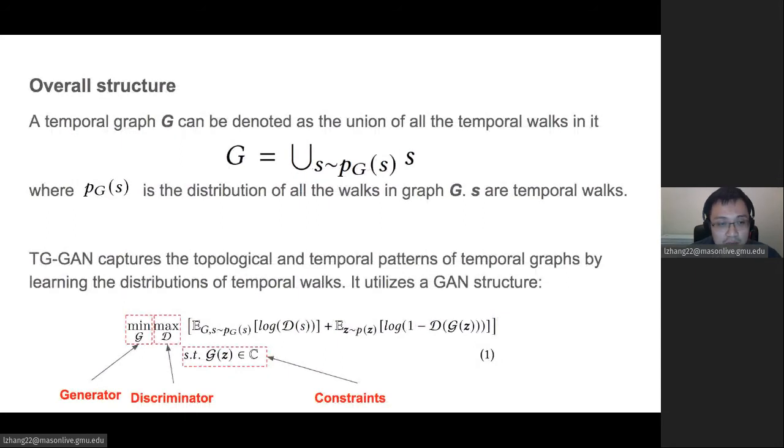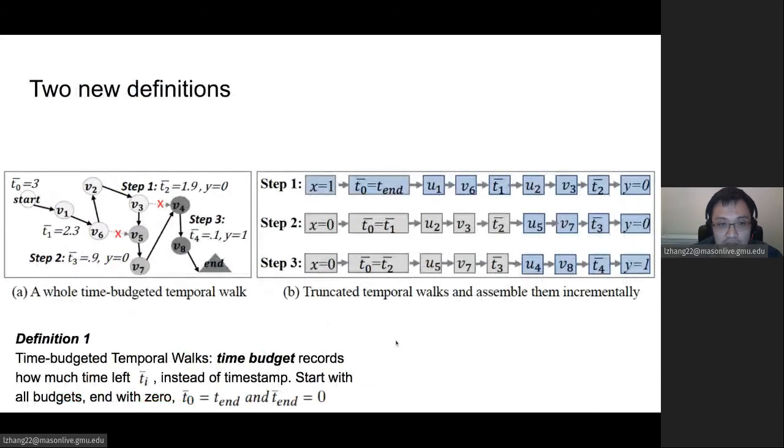The overall structure in our paper: a temporal graph G can be denoted as the union of all the temporal walks. Such temporal walks are coming from the PGS functions. TG-GAN is proposed to capture the topological and temporal pattern of temporal graphs by learning the distribution of temporal graphs. It utilizes a GAN structure. The first thing you see is generator and discriminator. The most unique thing for our work here is the constraint functions.